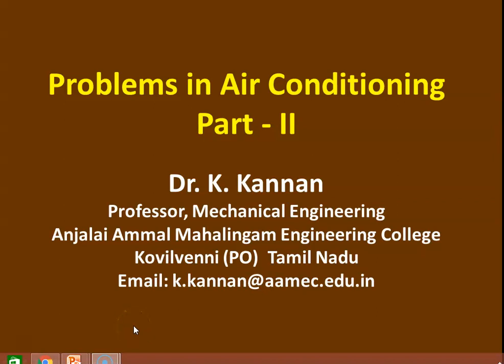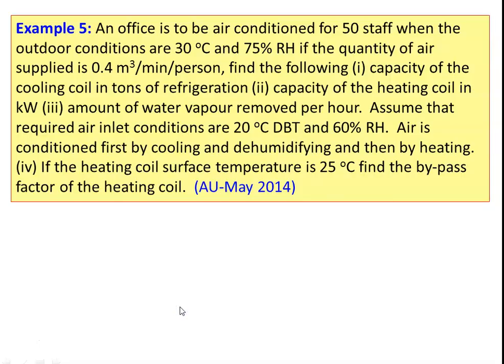We will continue with the problems in air conditioning, this is part 2. Example number 5: an office to be air conditioned for 50 staff when the outdoor conditions are 30 degree Celsius and 70 percent relative humidity. The quantity of air is 0.4 cubic meter per minute per person.